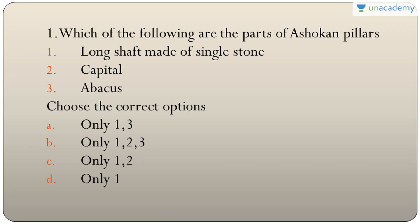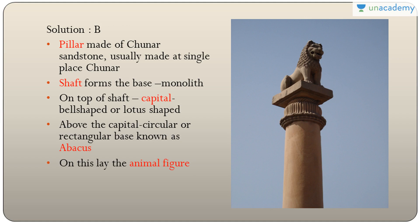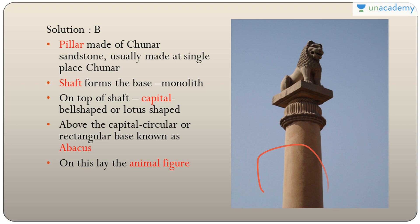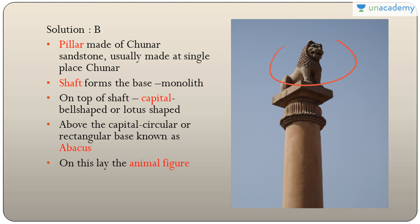The first question asks which of the following are parts of Ashokan pillars: long shaft made of single stone, capital, and abacus. All three are correct, so the answer is B — only one, two, and three. The pillar is made of Chunar sandstone. The shaft is a monolithic structure drawn from a single stone. Above the shaft is a bell-shaped or lotus-shaped capital, and above that is the rectangular or circular abacus.